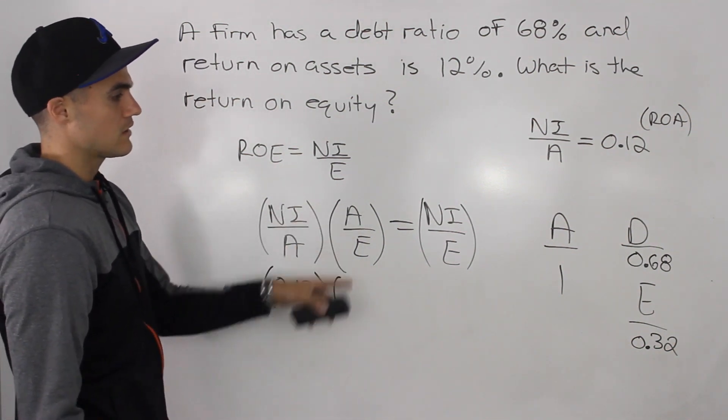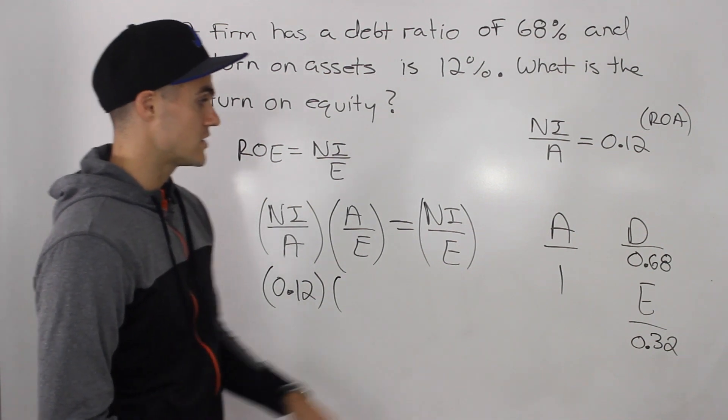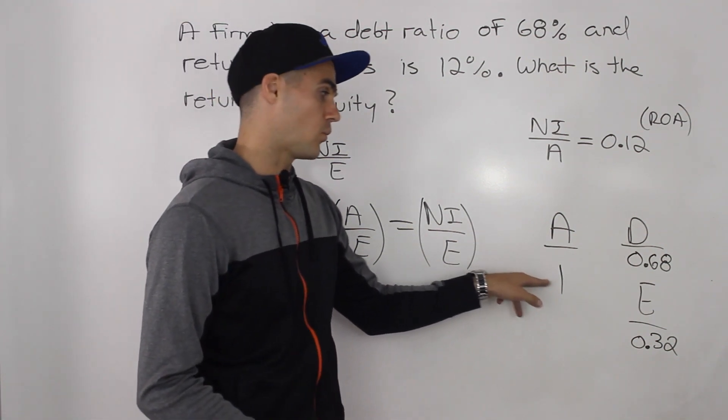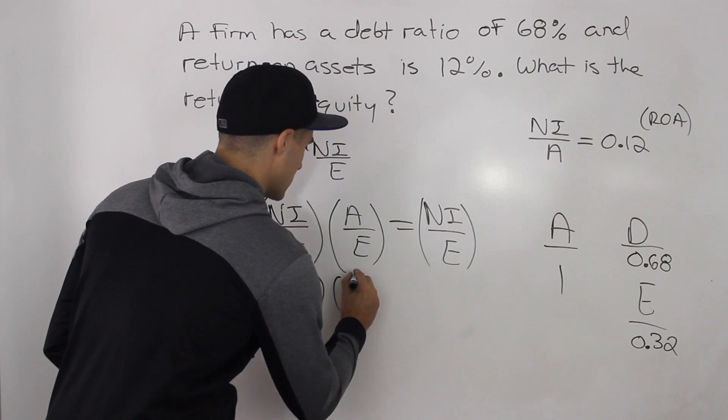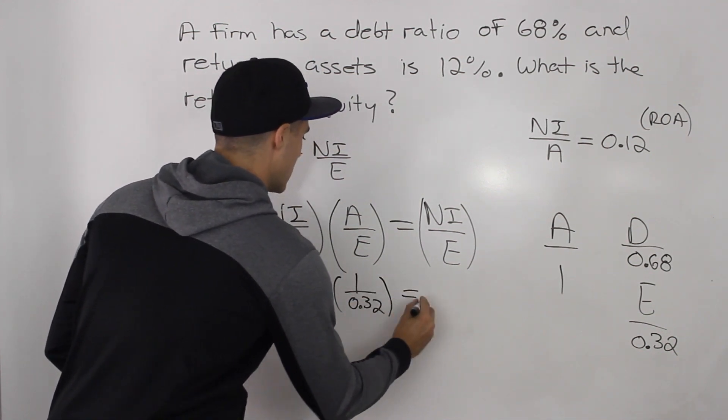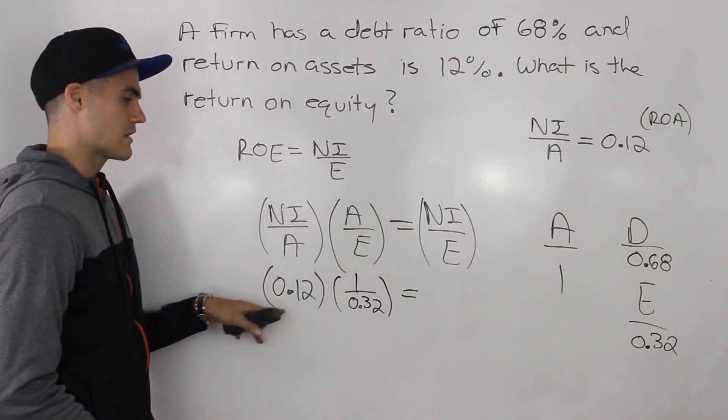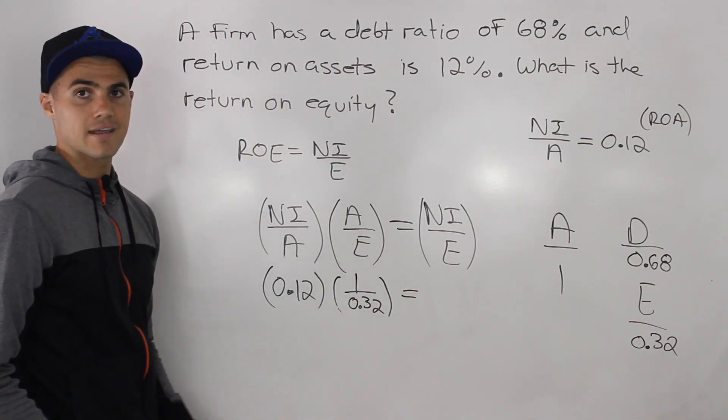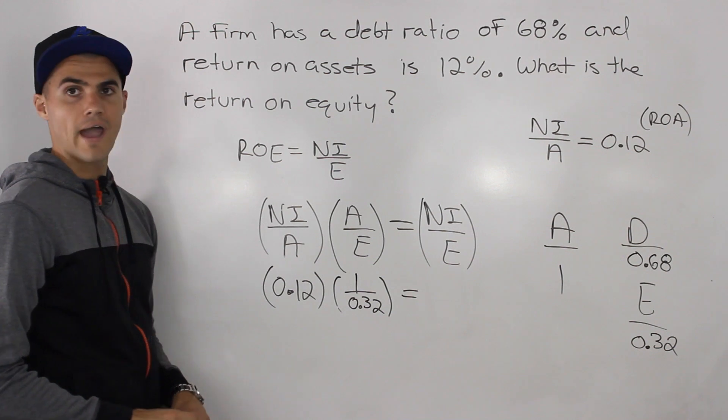And then the assets over equity, well, we can just get that ratio from our mini balance sheet, 1 over 0.32. So this would be 1 over 0.32.